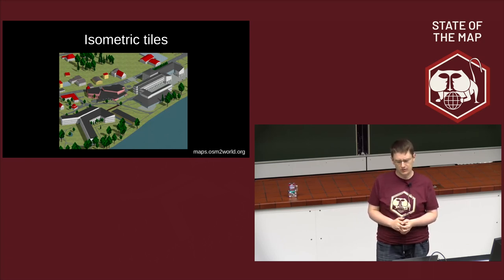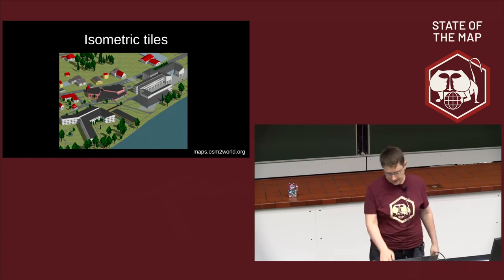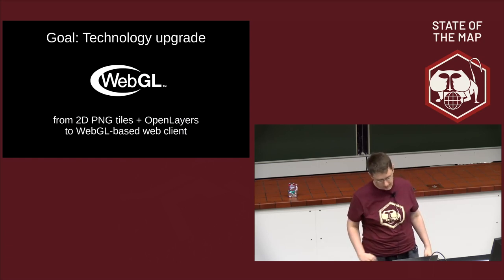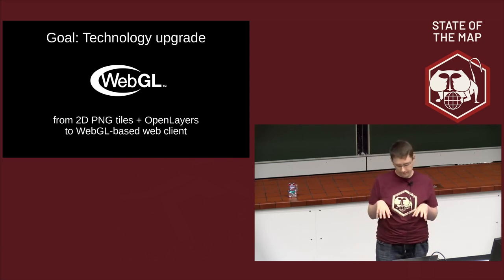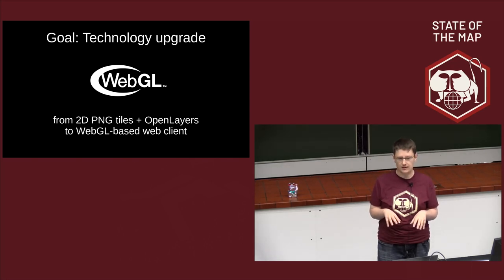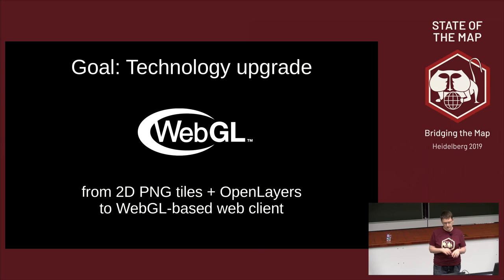The isometric tile service works by creating 3D models, making essentially virtual photographs from a particular angle, and cutting them into tiles so they can be shown with OpenLayers like regular 2D tiles. But nowadays this is very old technology, and the focus of this talk is our current project to use WebGL — a technology that's not even all that new anymore — to render real-time graphics in the browser.